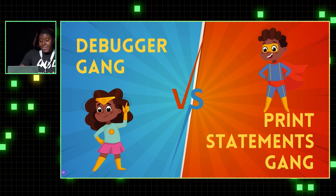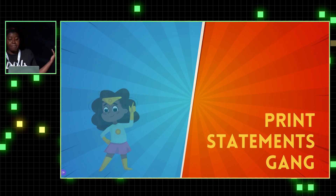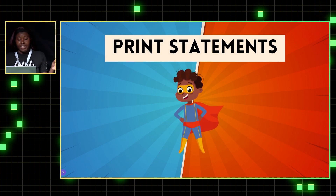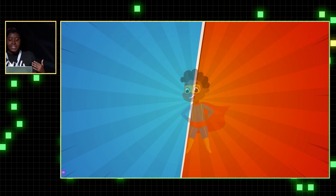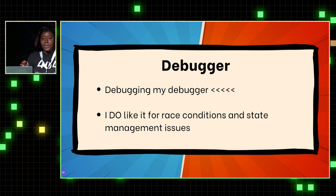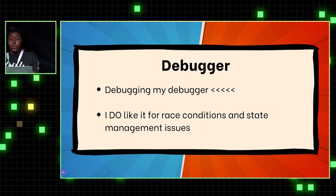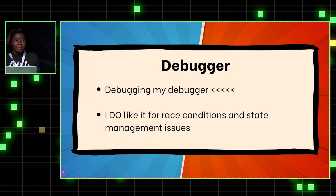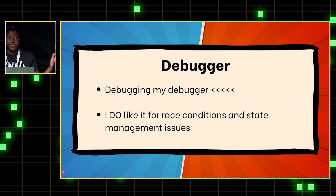I'll tell you all what my favorite is — maybe nobody cares, but I'm going to share it anyways. So I prefer print statements: 20% because I'm a little bit lazy as a developer, but the other 80% is I don't think debuggers like me. It doesn't matter what company or project I'm working in, my debugger is always broken. And then I have to edit the launch.json file, and then I feel like I'm just debugging my debugger so I can debug my code, and it feels really inefficient.